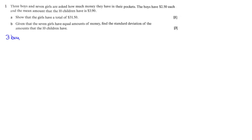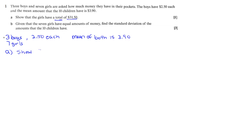Page 83, number one: we've got three boys and seven girls, asked how much money they have in their pockets. The boys have two dollars and fifty cents each, the mean of the group of ten children is three dollars and ninety cents, and we need to show that the girls have thirty-one dollars and fifty cents. Let's call the boys X's and the girls Y's, and the sum of all the Y's should be thirty-one point five. Here's our formula for finding the mean of two groups.